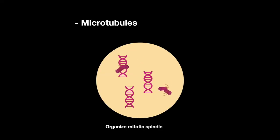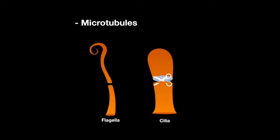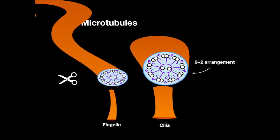Microtubules function in cell division and movement. They organize the mitotic spindle, arrange in a 9 plus 2 fashion in cilia and flagella, and route the movement for axonal trafficking.